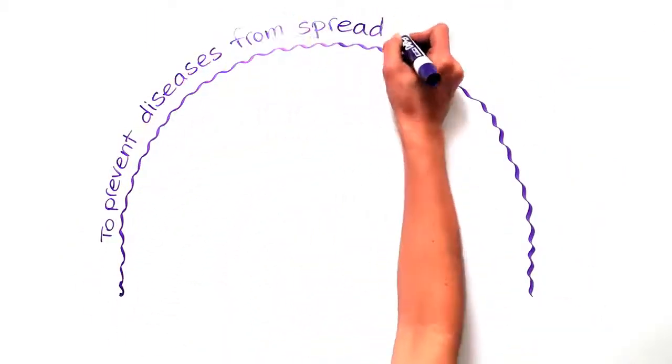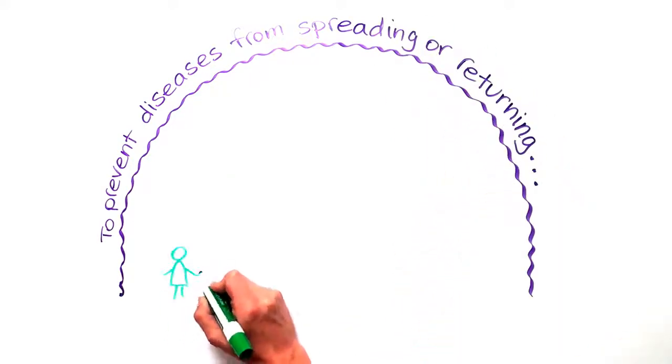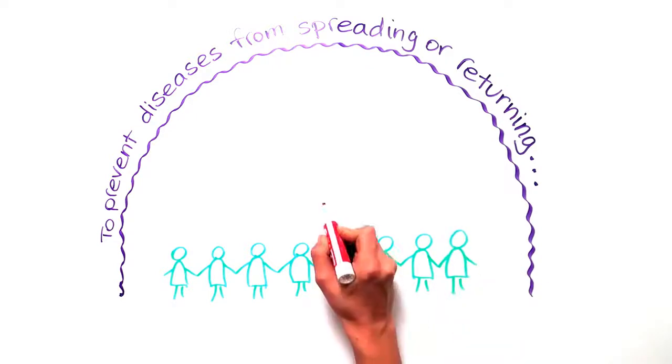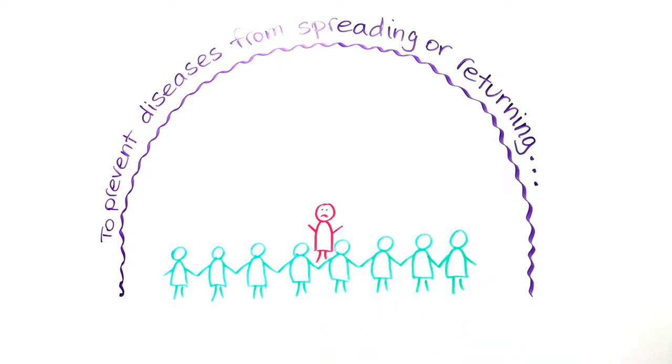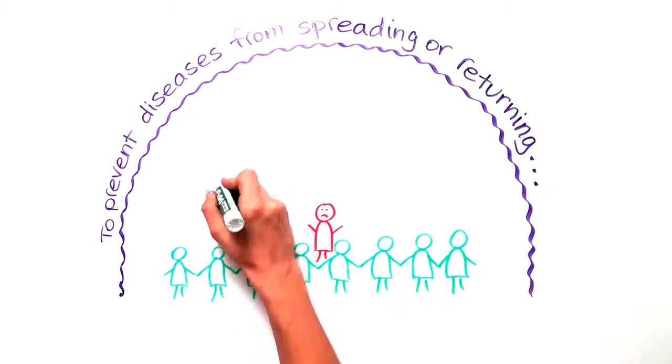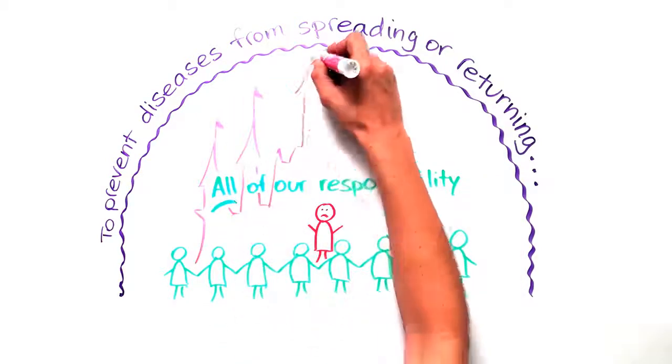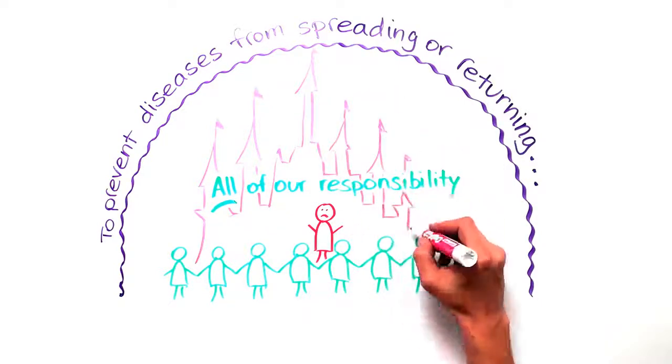To keep deadly diseases from returning and spreading, we need to have enough people vaccinated to act like a force field. Those that are immune surround an infected individual and prevent the disease from taking hold in a community. It is everyone's responsibility to prevent measles and other diseases from turning the happiest place on earth into the home base of a dangerous outbreak.